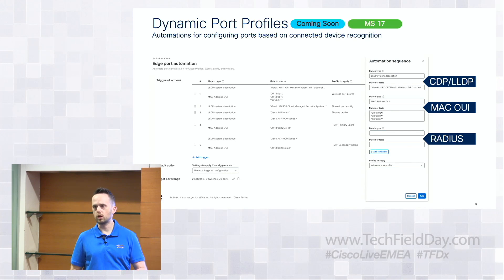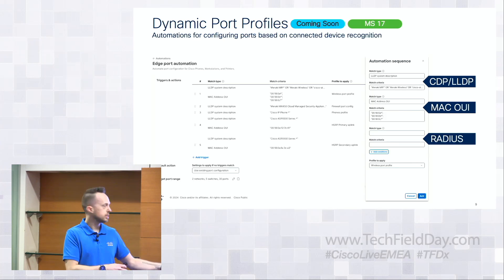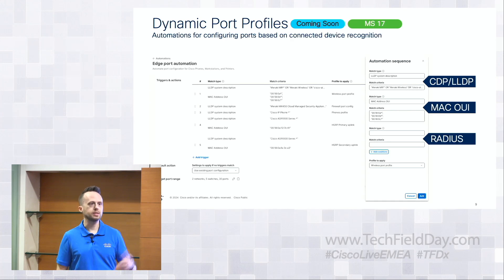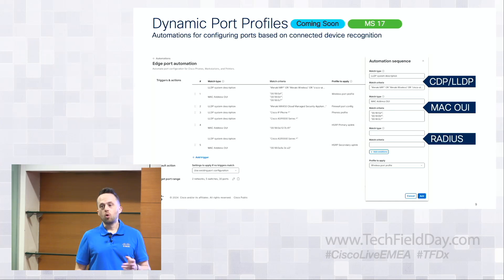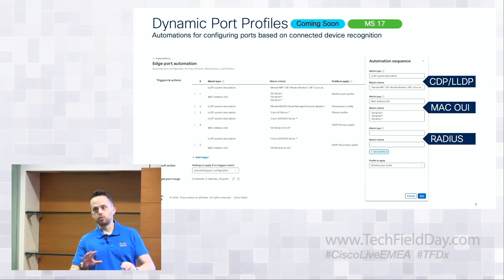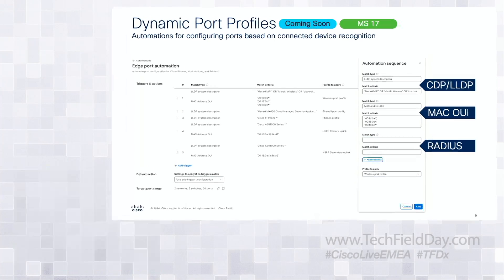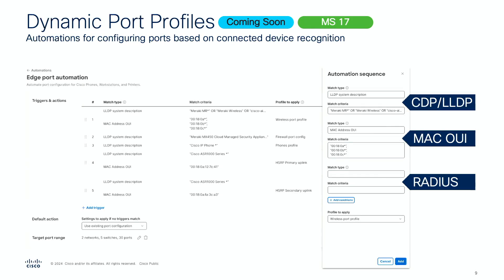This is the ability for you to create automations for whatever your situation is. Three main trigger mechanisms initially: CDP/LLDP, MAC OUI, and RADIUS responses. For example, a Cisco phone — you can detect it based on CDP or LLDP and match on that. Just about every device you can think of, you can probably determine at least the manufacturer based on the MAC OUI. Or you do 802.1X authentication and have the RADIUS server send back a port profile to apply. You plug something into a switch port, it identifies that device one way or another and applies a port profile — and when you unplug it, it goes back to a default config.